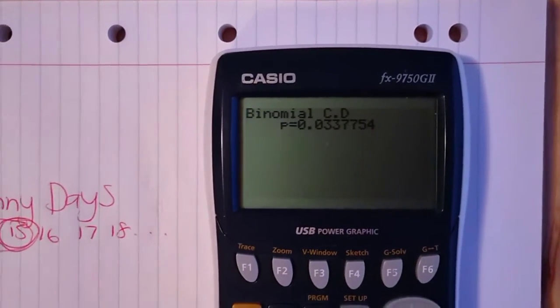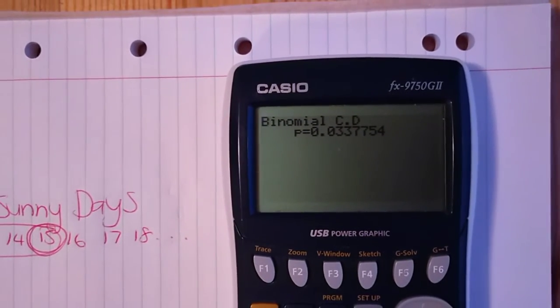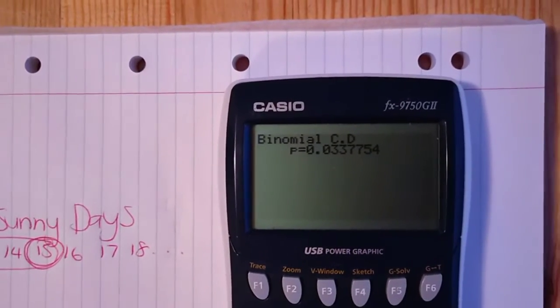And when you click execute, that means the probability of 15 or less sunny days is 0.0338. And that was rounded to 4 decimal places.